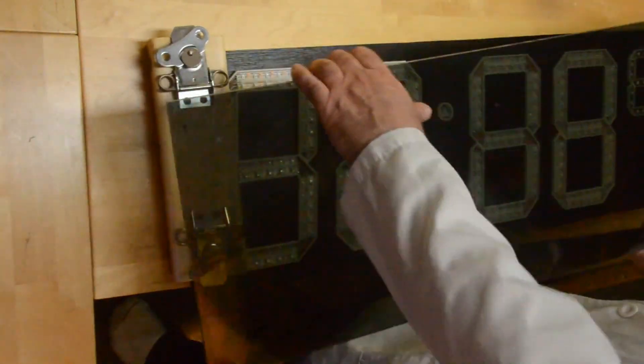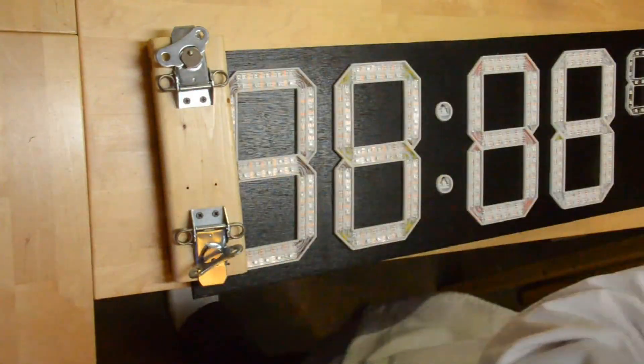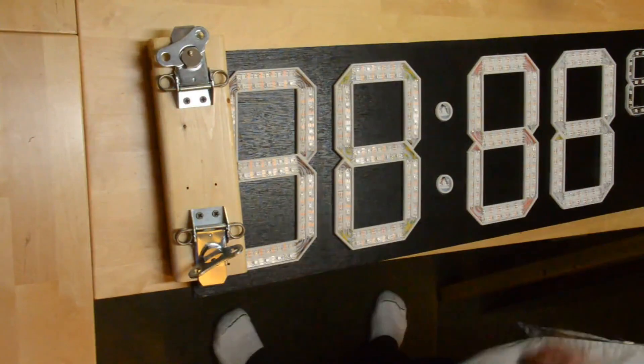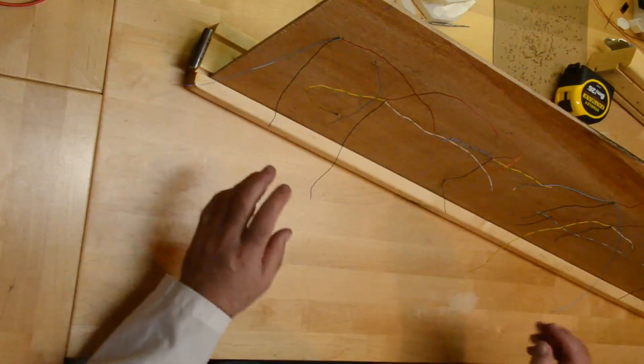The smoked polycarbonate will add an increase in contrast, which will make the digits much easier to read than if they were just out in the open. Although, they're still very readable as it is.